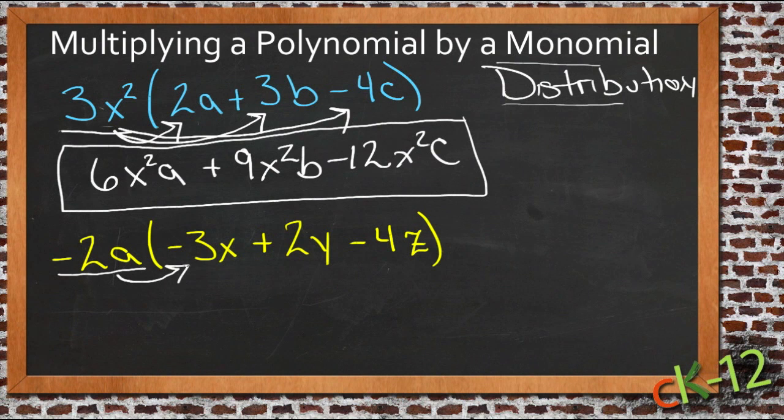Negative 2a times negative 3x will be positive 6ax, or xa, it doesn't matter.